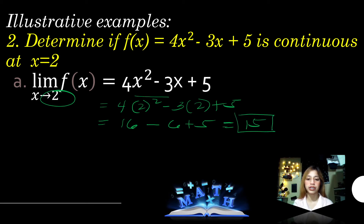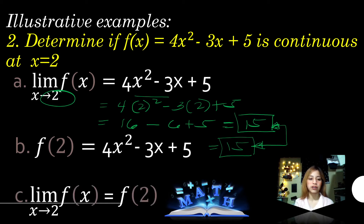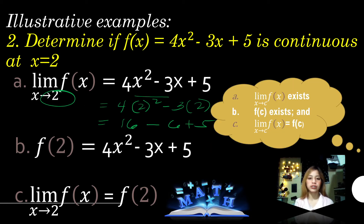16 - 6 + 5 = 15. Since 15 is a defined value, it satisfies the first condition. For the second condition, f(c) must exist — this is the same as the first condition by substitution, giving the same value of 15. The values from a and b are equal, so it satisfies the third condition as well. Therefore, the function is continuous at x = 2.